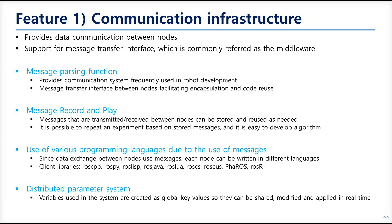The sender encapsulates the data as the message defines, and the receiver extracts it under how the message defines. As the data is available for any node that wants to communicate, multiple nodes can receive the same data from one node. Besides, there is a special node that can record this data or play the recorded data. You can record all data flowing during robot experimentation and play the data for further tests — you don't need to run the robot many times for your work.